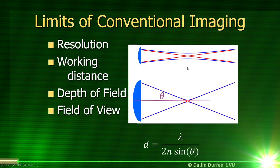The resolution limit is given by the Abbe limit equation, where the smallest thing you can see depends on the wavelength of the light you use and the sine of the angle of light that you capture. The index of refraction of the medium times the sine of the angle is known as the numerical aperture. For high-resolution images, you need a large numerical aperture.